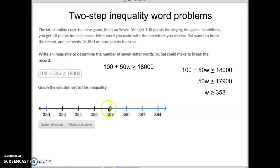So we move the solid dot, because it's got an equal sign underneath. Solid dot to 358. W is greater, we want the numbers that are higher than 358. Right, and there we go. That's all there is to it on that one.